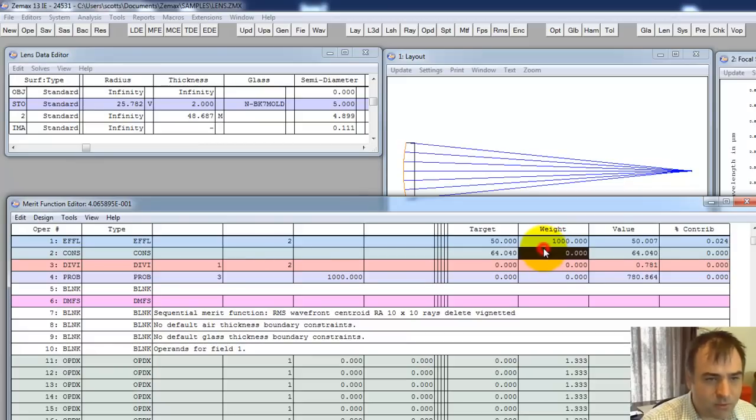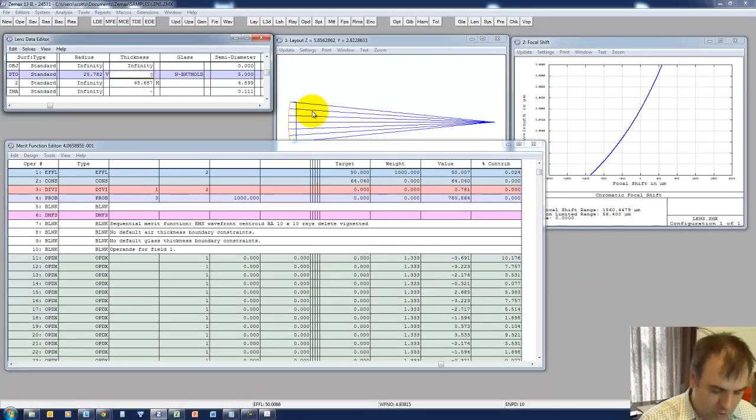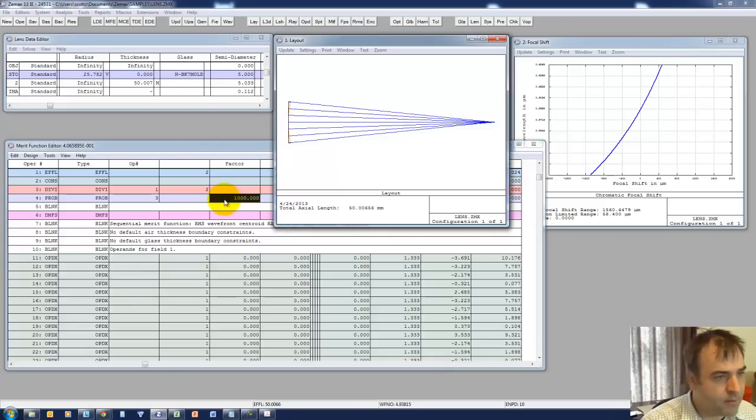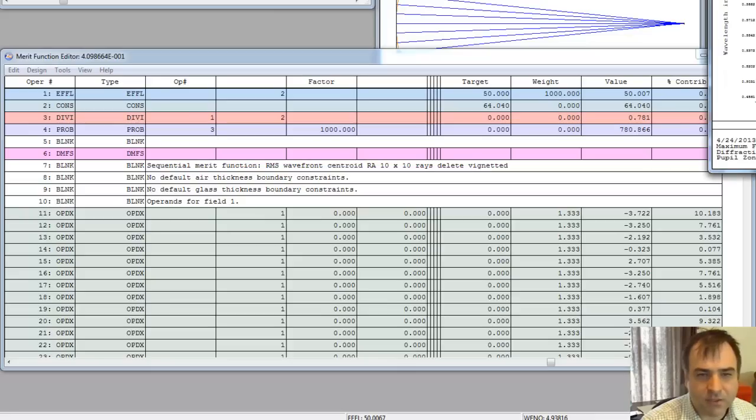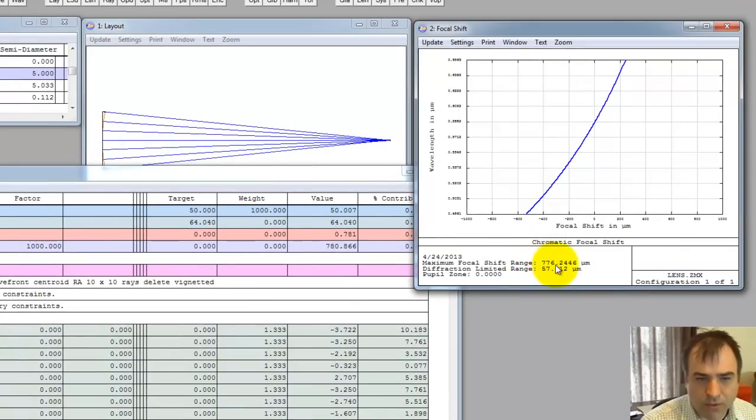Now we have to update for what the Abbe is. I'm going to cheat, it's 64.04. And let's double-click to update. It's saying for this molded BK7 with a 0.0012 index drop, it's going to have an axial color, defocus versus wavelength, of 780 microns. We're going to cheat, make it a zero-thickness lens. It looks odd but it's going to be more accurate. Let's re-optimize. 780 versus what ZMAX is calculating, 776.